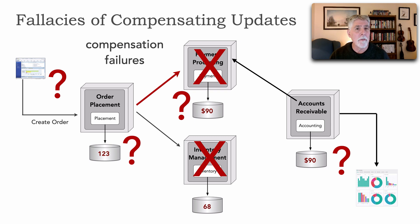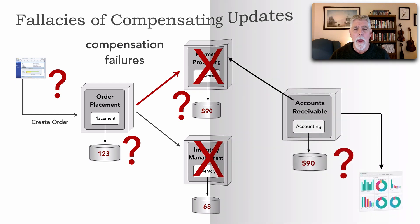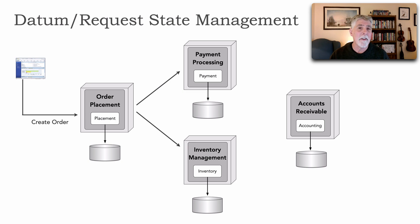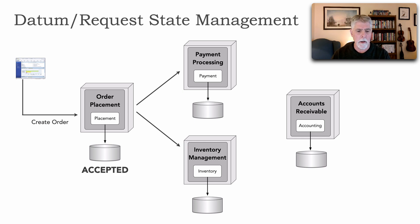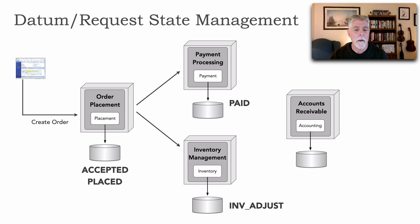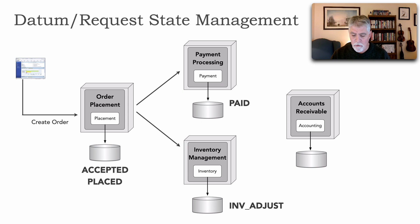I ended lesson 148 with this problem, because the purpose of that lesson was to really show the fallacies of simply using a compensating transaction during the course of a distributed transaction. What I want to show in this lesson is one way of addressing this issue, and that is with datum or request state management — where a particular request, let's say an order ID, has corresponding state associated with it.